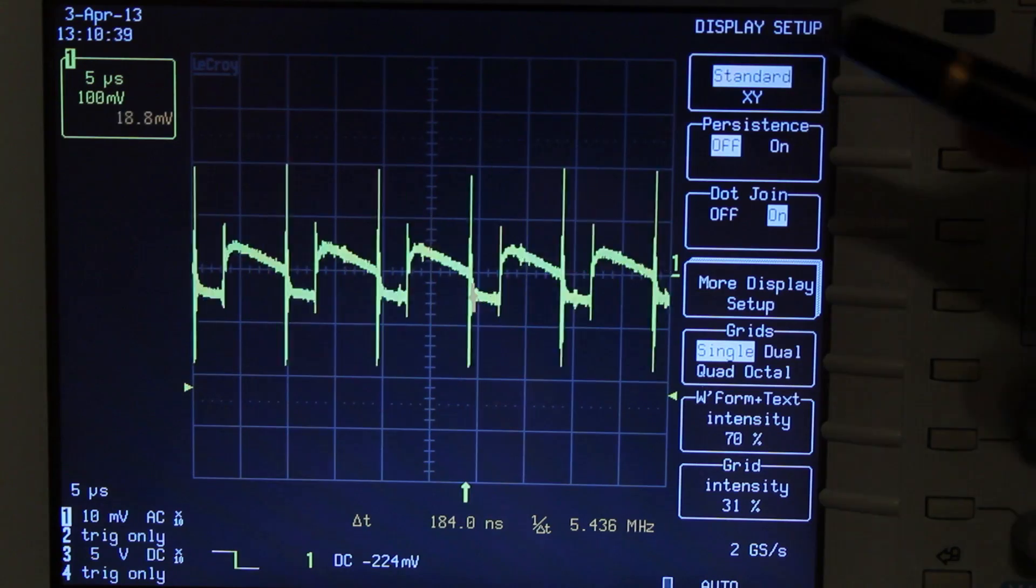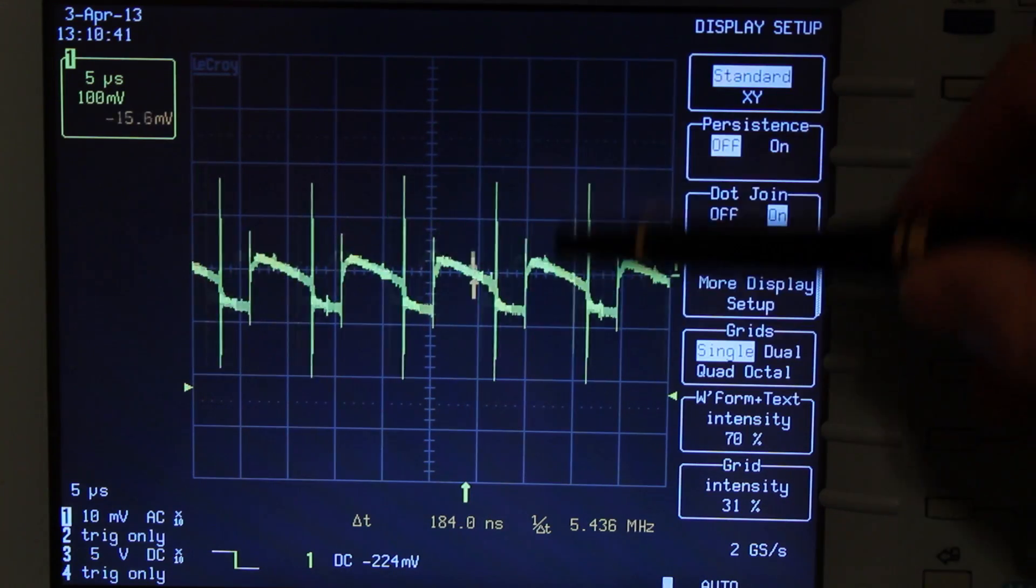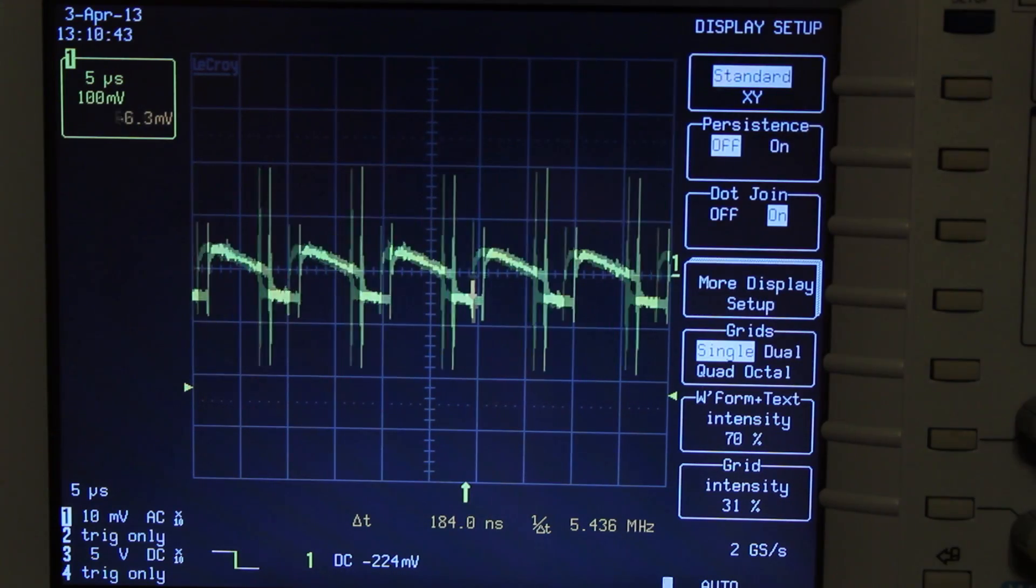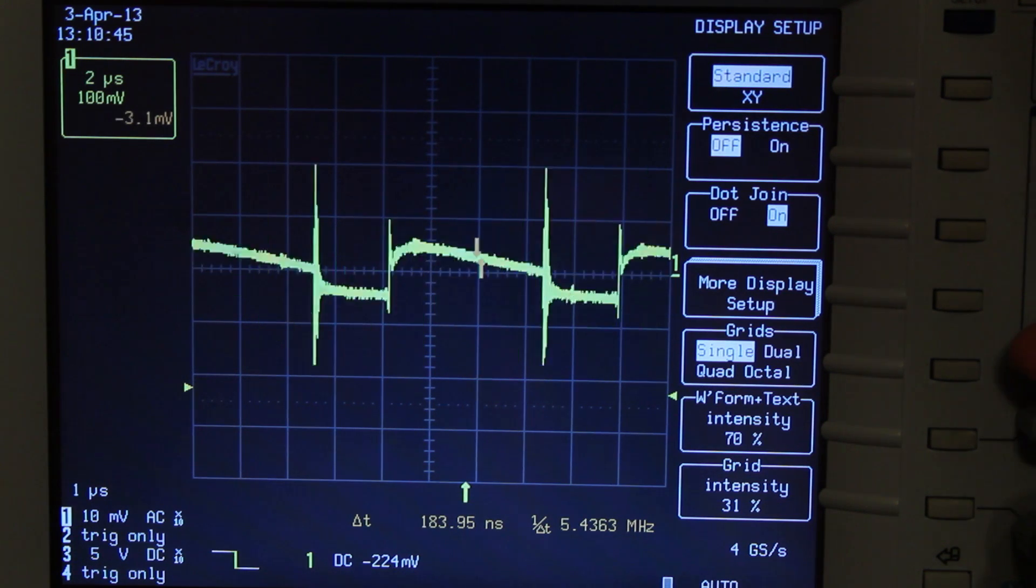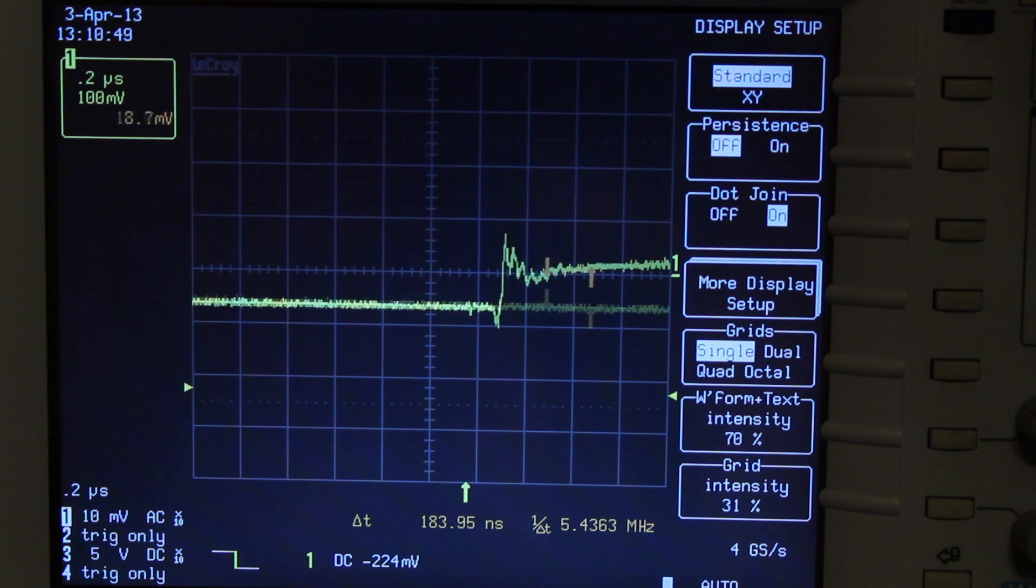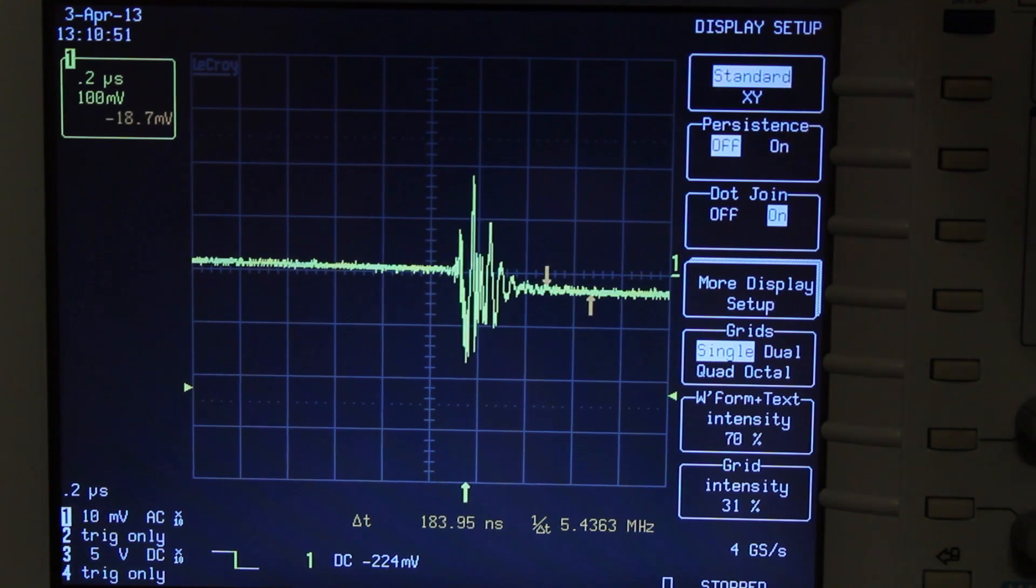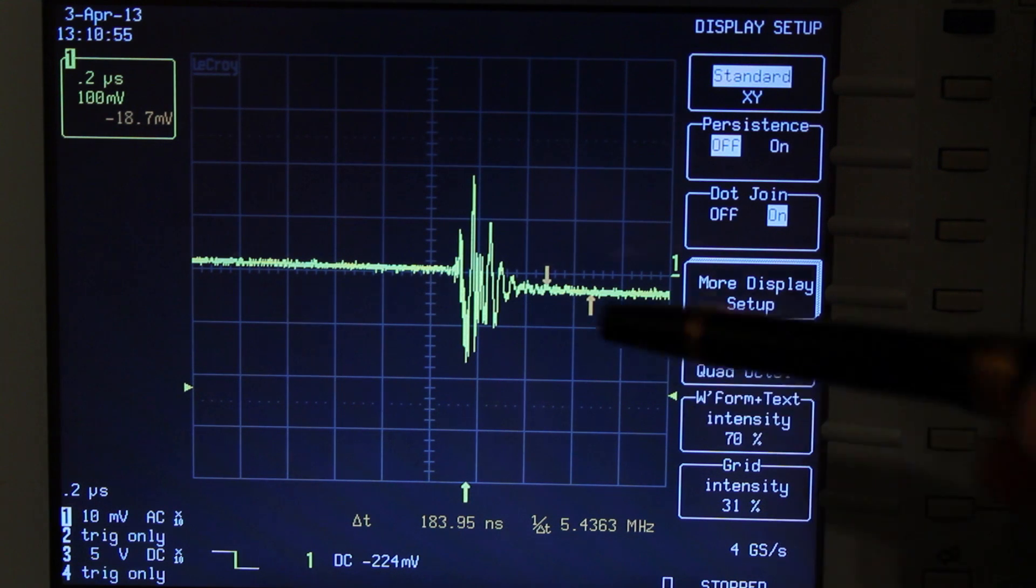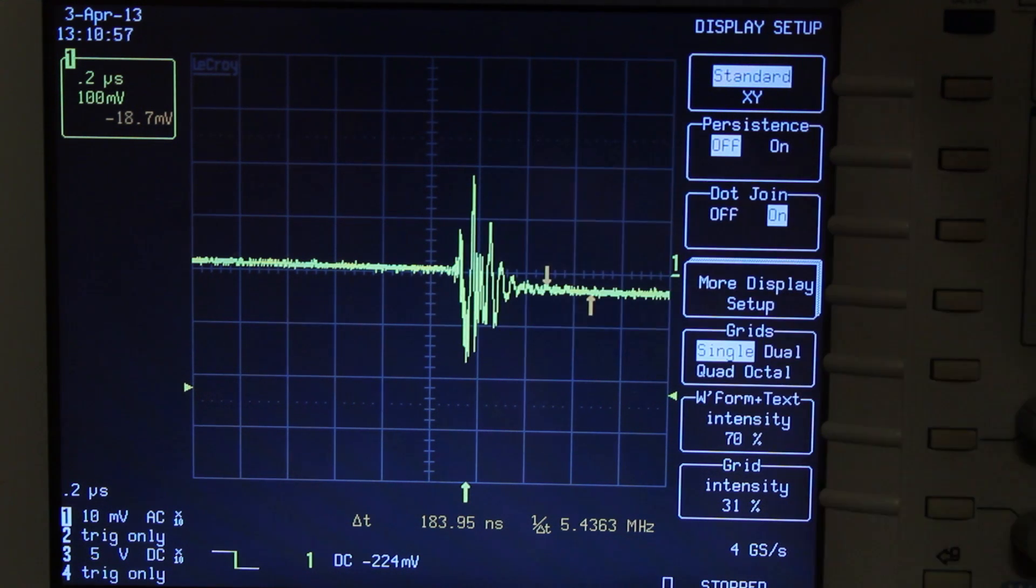But we can see there's still spikes that haven't been resolved at this time base. So let's turn the time base a little bit further. Now we go to 200 nanoseconds per division. And there if we do a single shot capture, we can see the noise that exists at 200 nanoseconds. And that's probably about 20 megahertz noise or more, which is going up to 400 millivolts.